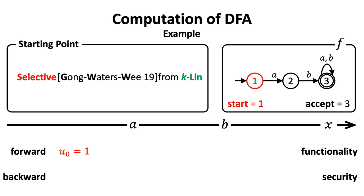The forward computation is the normal way of computing DFA, as I mentioned before. We start with state 1. The machine reads the first bit, which is A.